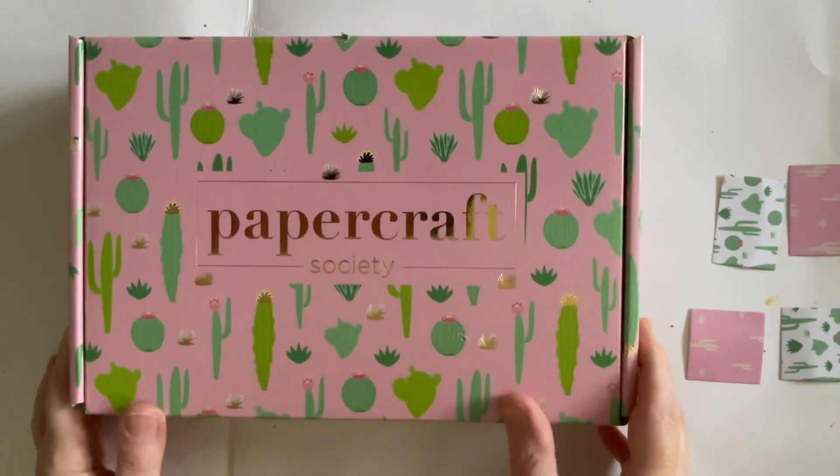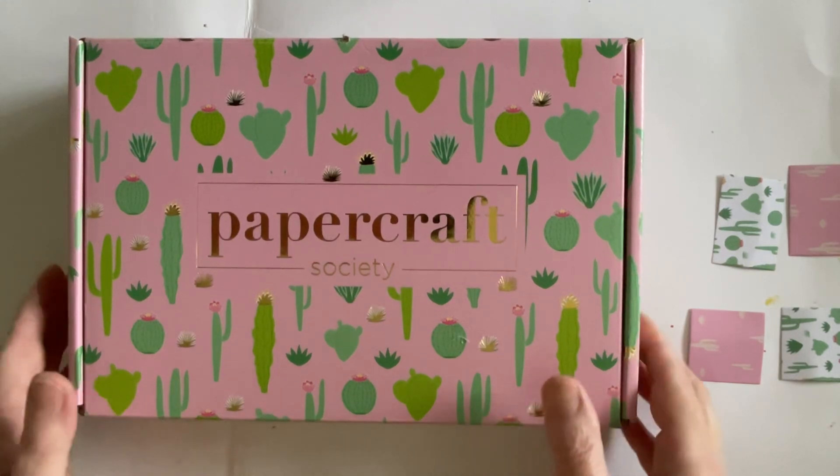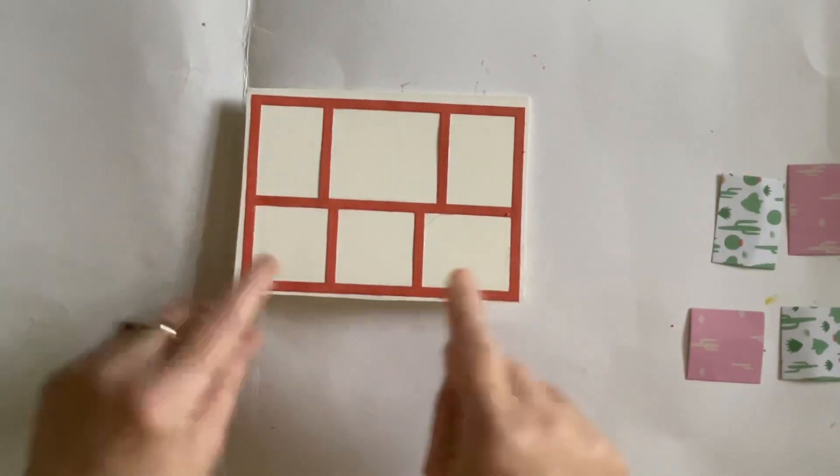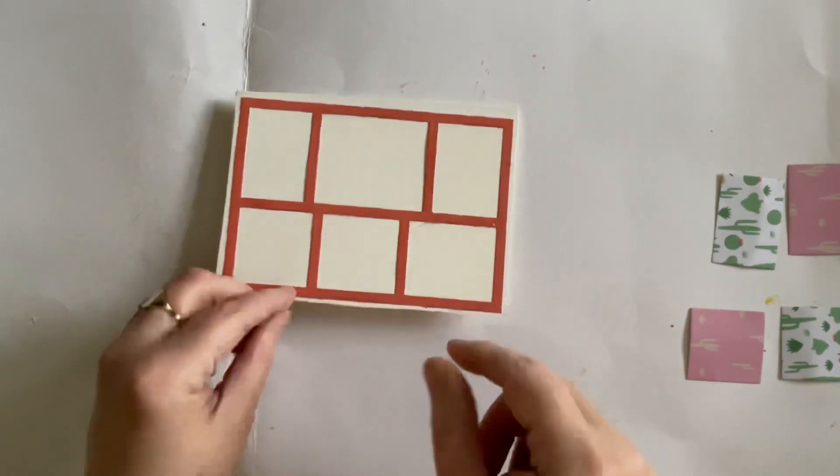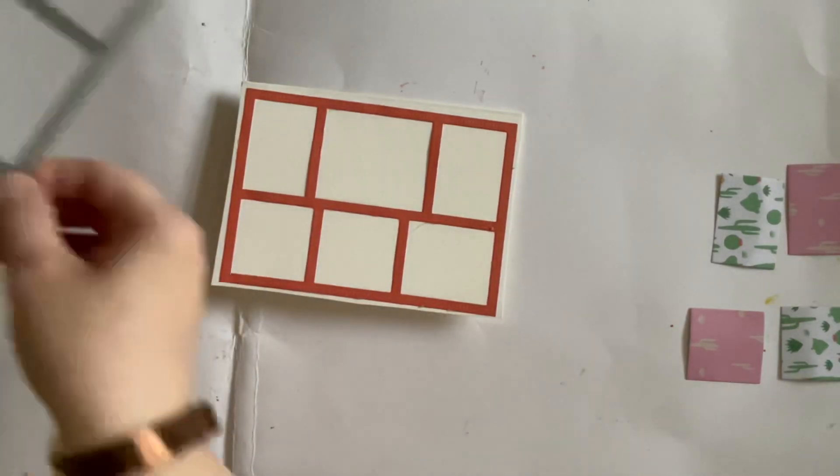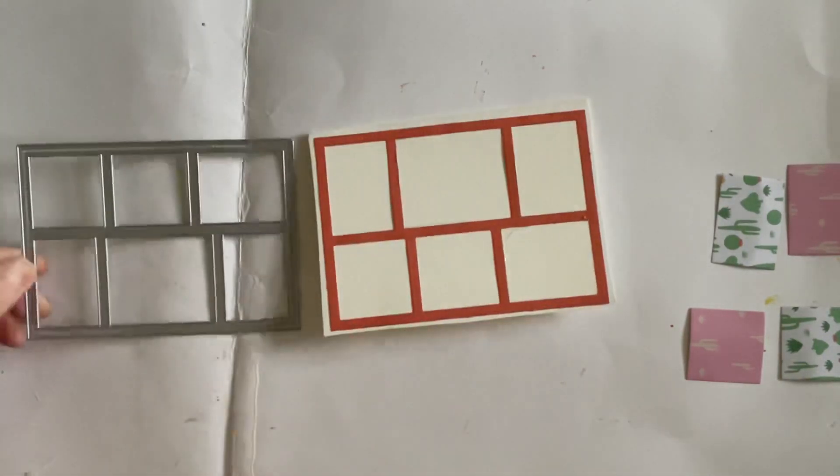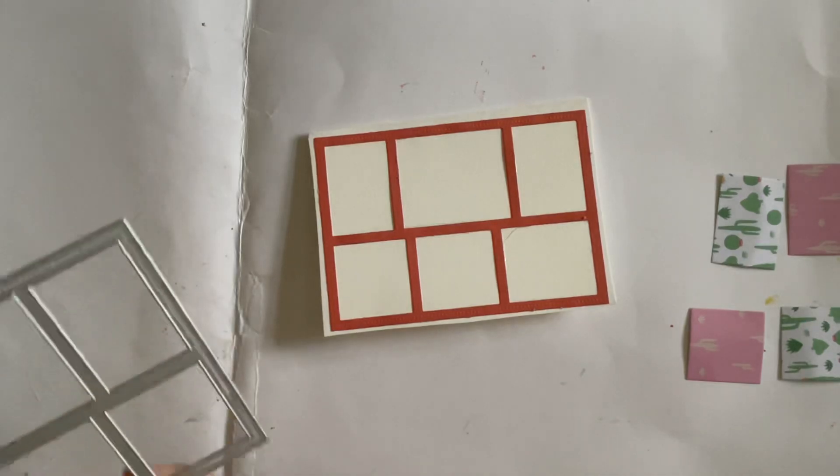We're going to use one of the things from yesterday but in a different way. Let me show you what we're going to do. I've made a bit of a start. This is another six by four card and I have used the terracotta card.